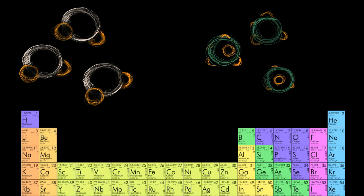Even though it's neutral, because of this shape and because the oxygen is more electronegative, you can end up with a more positive charge on one end and a more negative charge on the other end. If we look at the periodic table, we know in general as we go to the top right, we get more and more electronegative. And oxygen is one of the most electronegative of the elements.